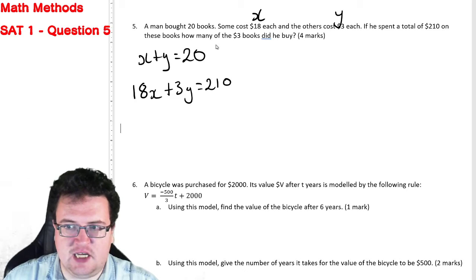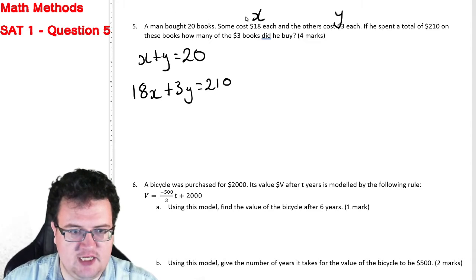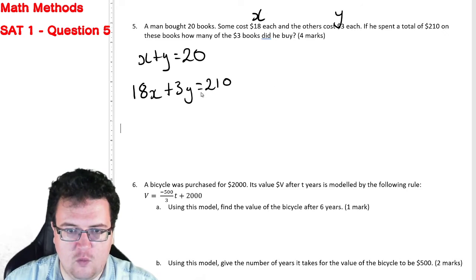And the question is asking us how many of the $3 books did he buy? We don't care about what X is. We care about what Y is equal to. So our goal will be to find a value for Y.